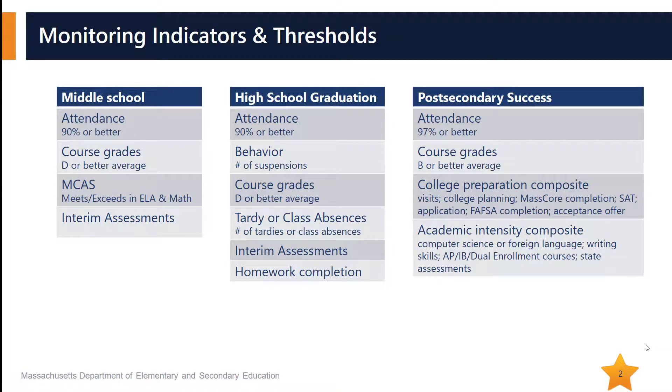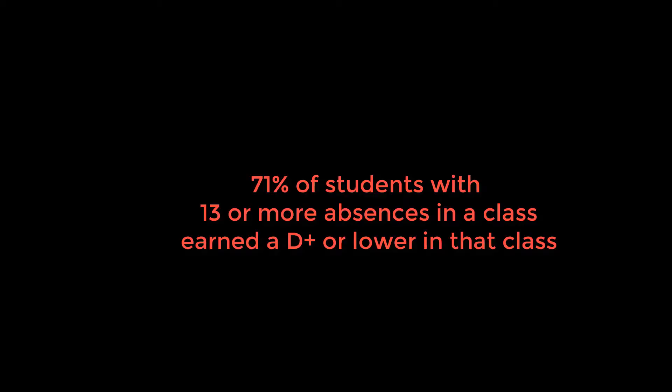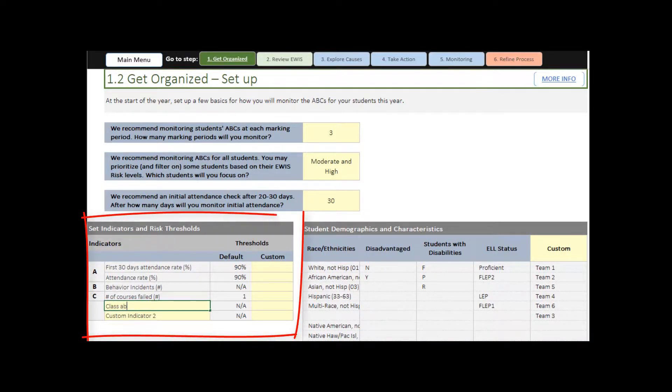Up to four indicators may be enough. We have an attendance policy, but separate from that, we're interested in the number of class absences. Looking at the last two ninth grade cohorts, we found that 71% of students who had 13 or more absences in a class earned a D-plus or lower in that class — that's about less than four absences per quarter. Communicating that to students and teachers, we're hopeful that knowledge will be powerful and will lead to more structured interventions.